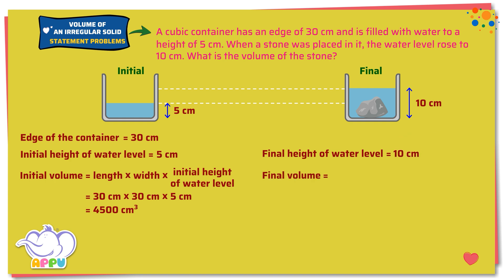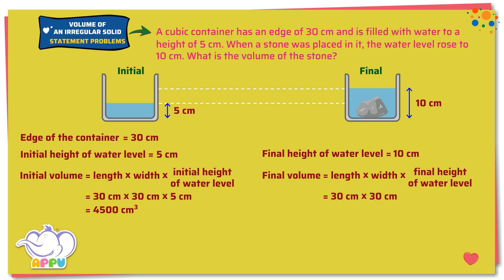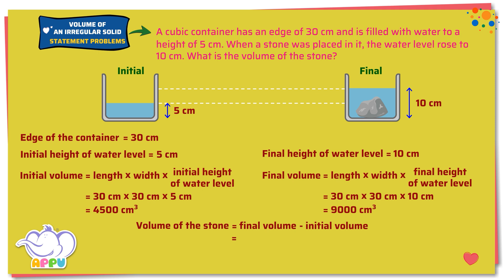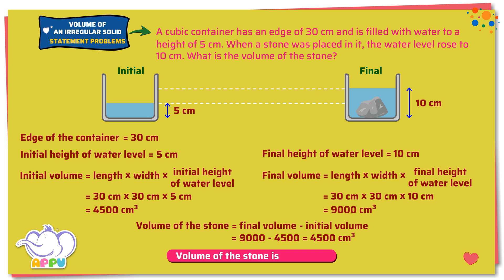Final volume equals length times width times final height of water level: 30 cm × 30 cm × 10 cm = 9,000 cubic centimeters. Volume of the stone equals final volume minus initial volume: 9,000 minus 4,500 equals 4,500 cubic centimeters. So the volume of the stone is 4,500 cubic centimeters.